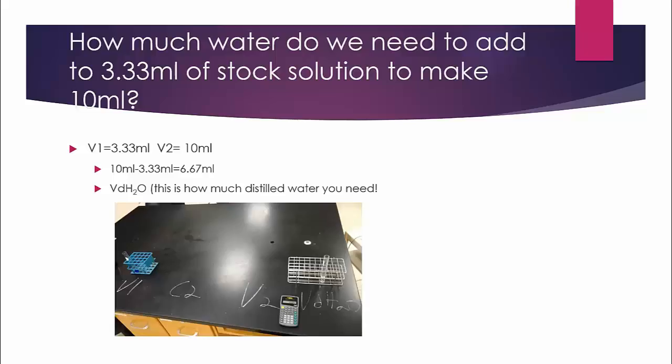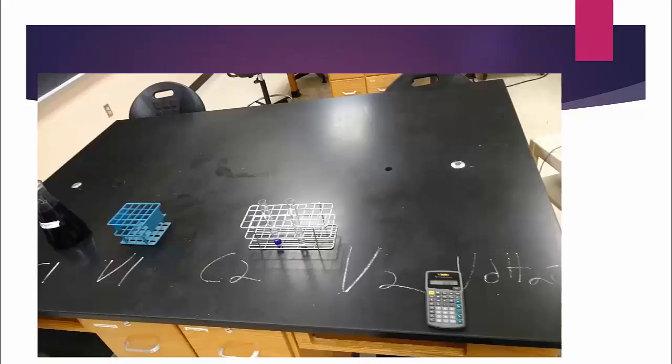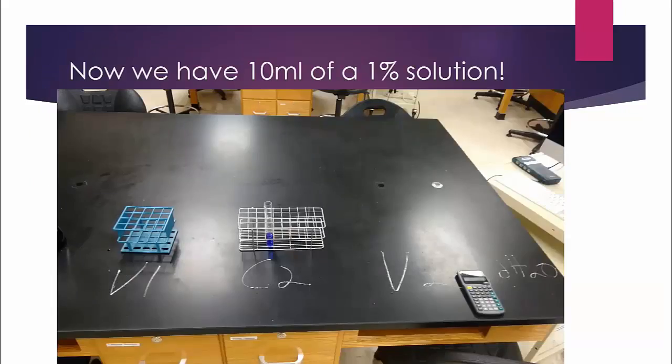We add water to the stock solution, to our 3.33 mils of stock. We are going to combine the two together. And now we have made our dilution. We now have 10 milliliters of a 1% solution.